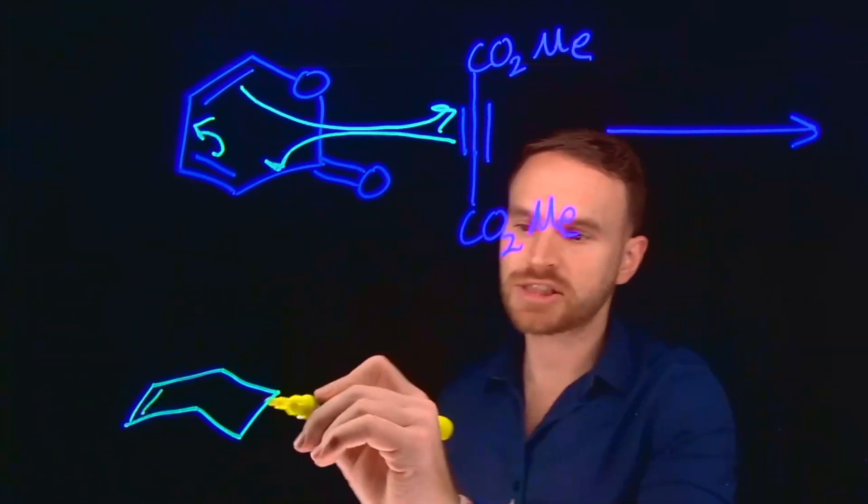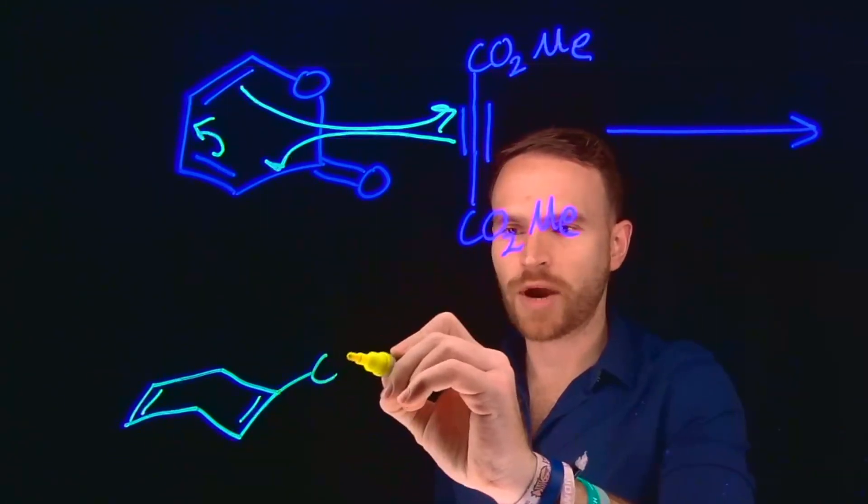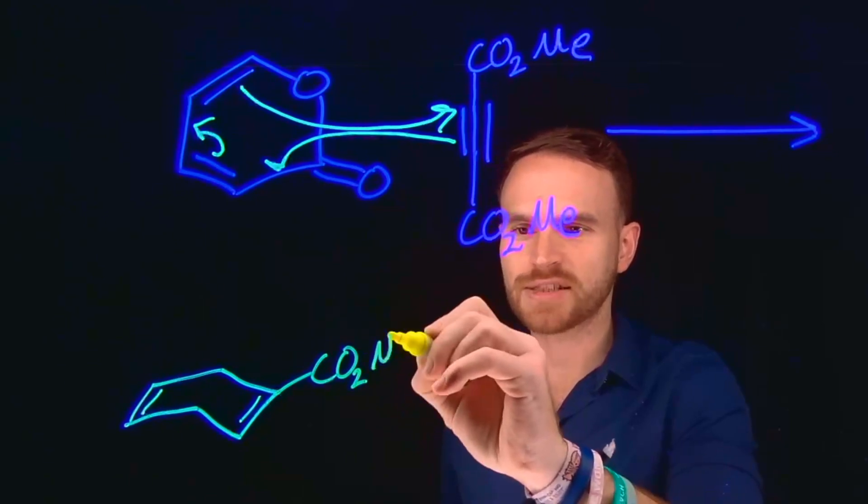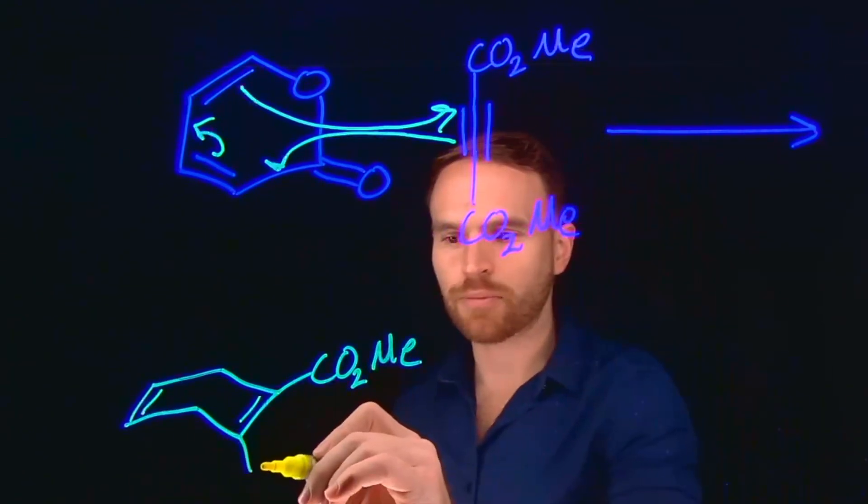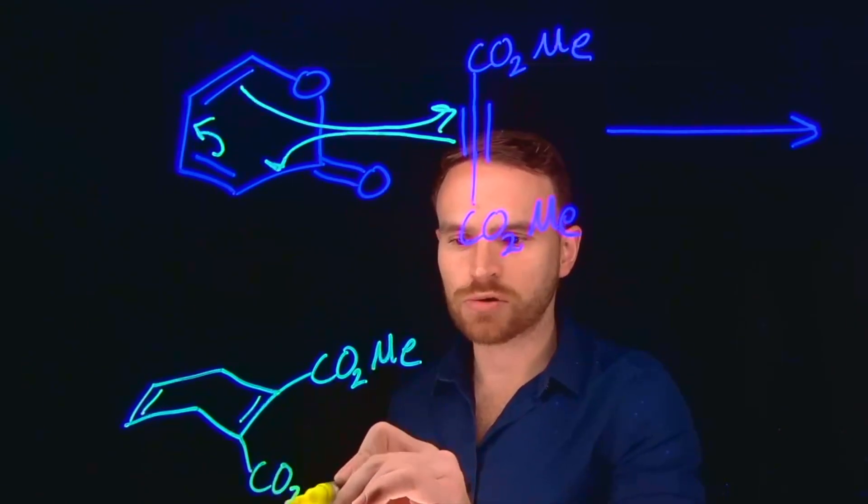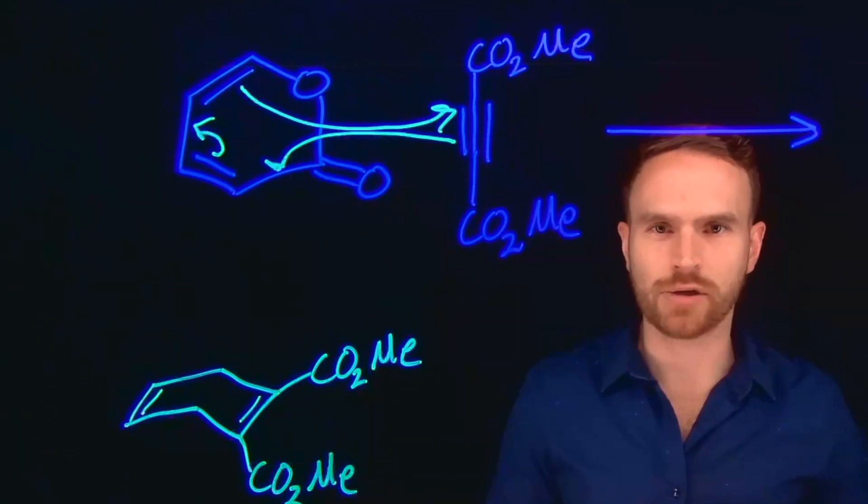...there's still another pi bond. So then our esters will be coming off at this direction, and we don't need to necessarily consider the endo rule because this pi system gives us sp2 hybridized carbons that don't result in any sort of designation as to the endo rule for Diels-Alder reactions.